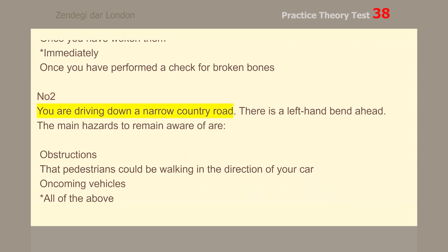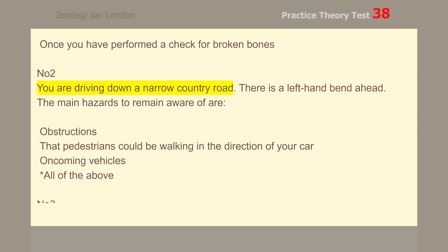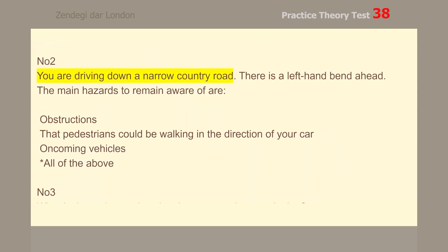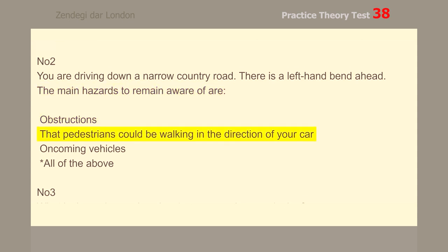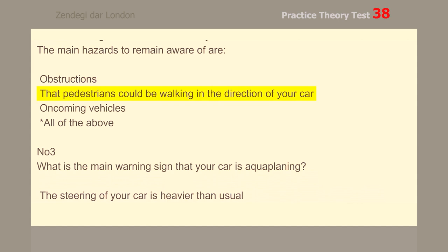Number 2. You are driving down a narrow country road. There is a left-hand bend ahead. The main hazards to remain aware of are: obstructions, pedestrians walking in the direction of your car, oncoming vehicles — all of the above.